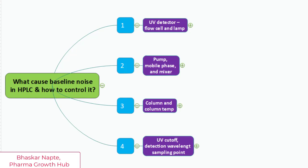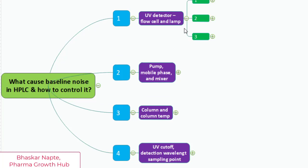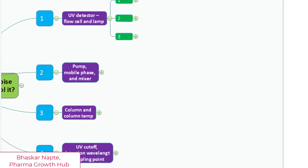Hi, Bhaskar here and this video is going to highlight some of the important tips that you can apply in your lab to reduce or completely remove these anomalies. Let us begin with point number one where we discuss the UV detector and how the flow cell and its lamp can result in baseline noise.